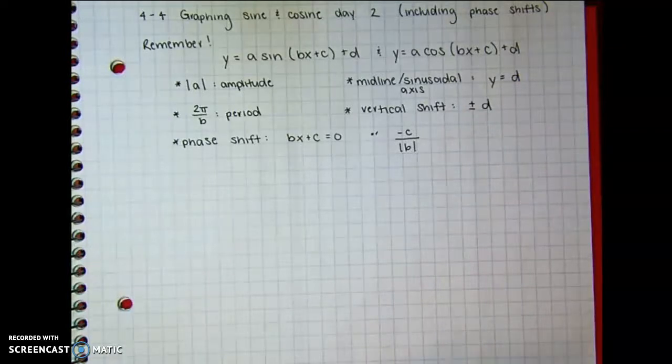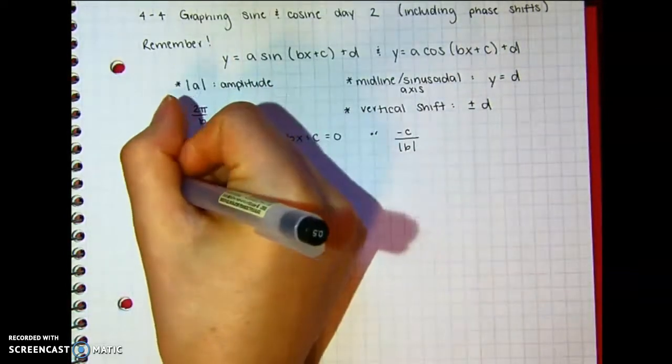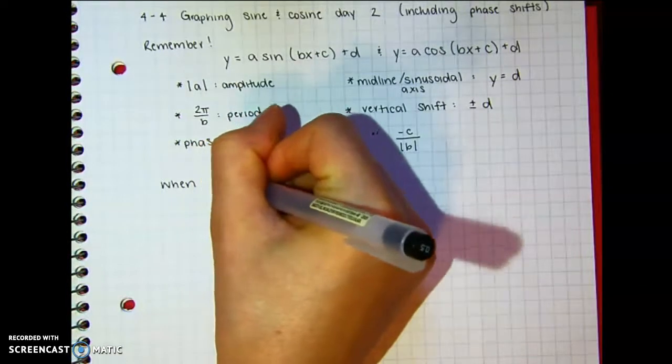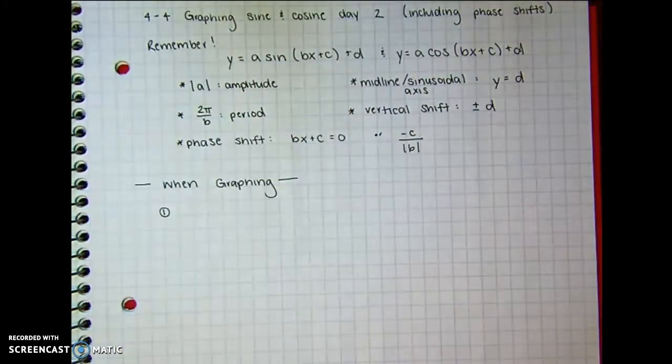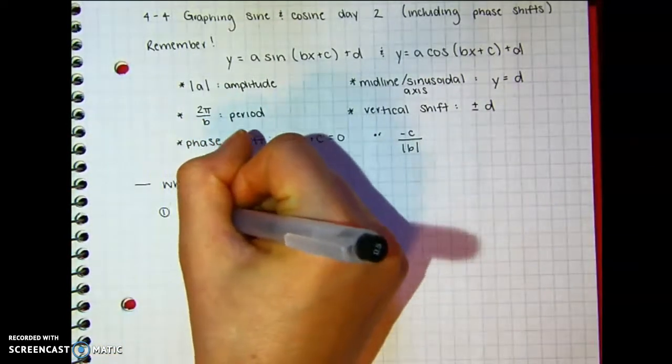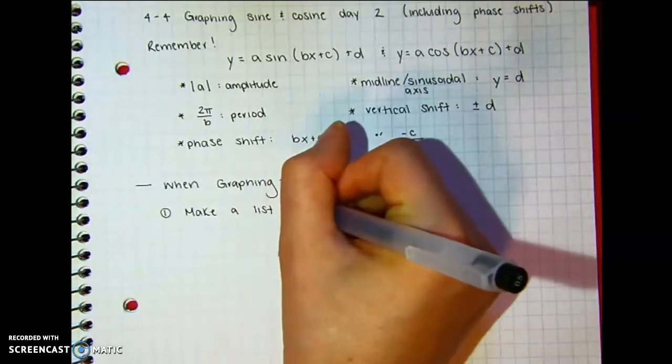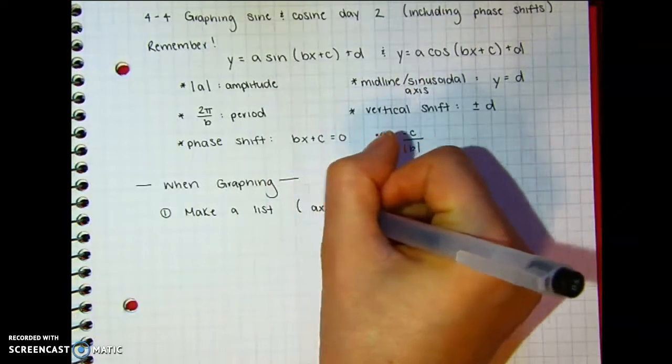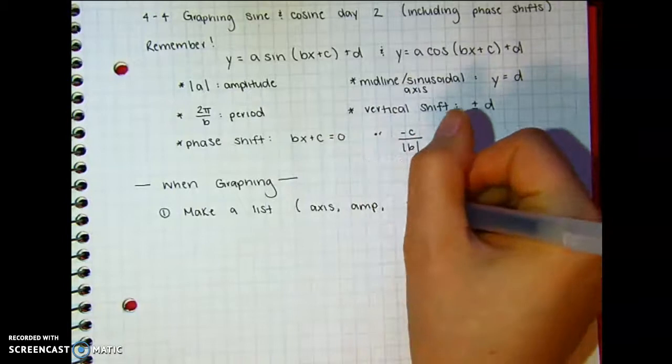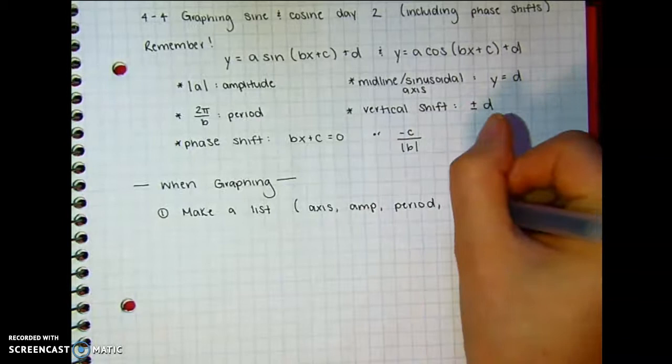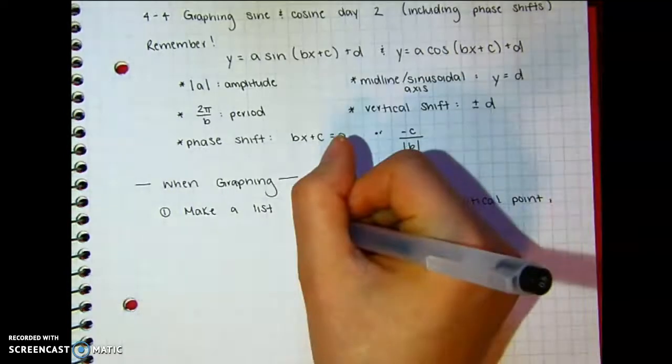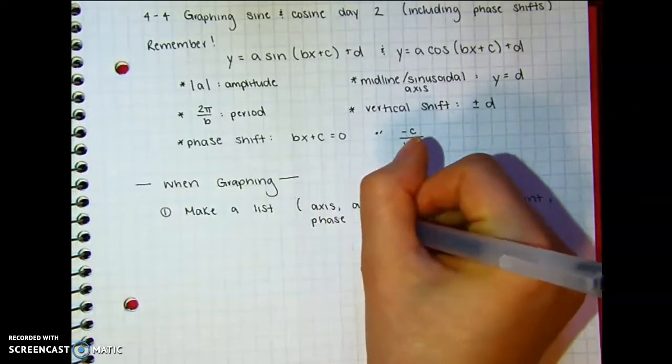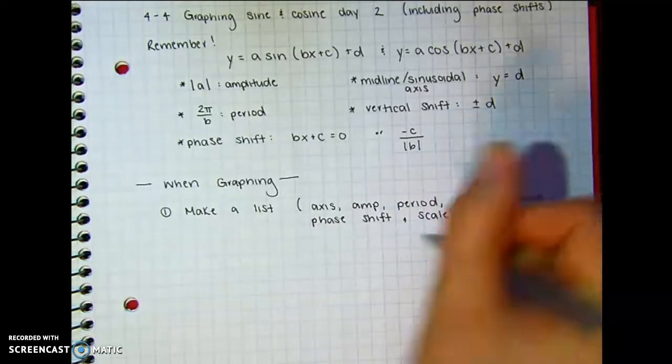So when you're graphing, you're going to want to include your period and critical points. Maybe we should just list it. When graphing, I would make a list. And you're just going to solve for your axis, your amplitude, your period, your critical point distance, phase shift, and if you're graphing by hand, your scale.